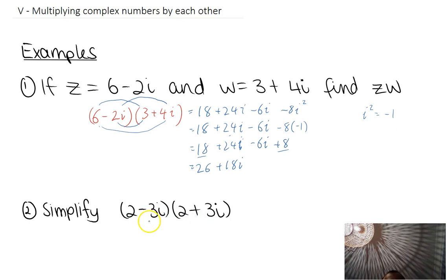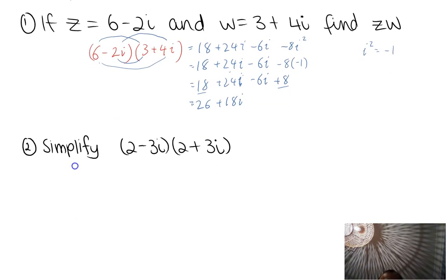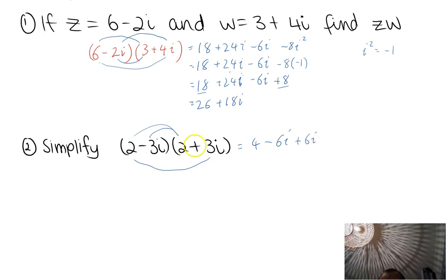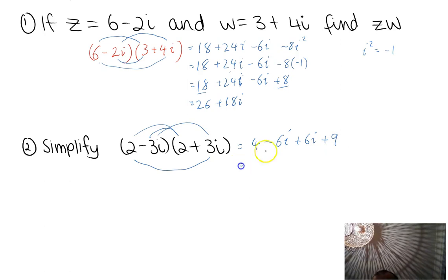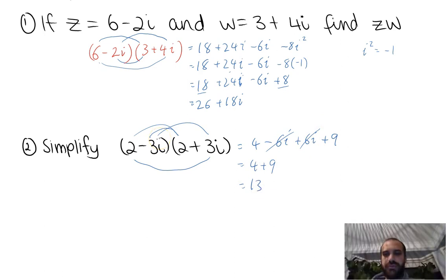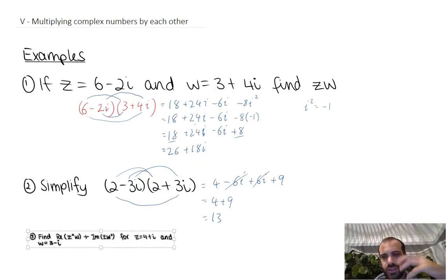I want to show you this because it looks a lot like a difference of two squares type question — let's see what magic happens. 2 times 2 is 4. Negative 3i times 2 is negative 6i. 2 times positive 3i is positive 6i — those cancel. Negative 3i times 3i would be negative 9i squared, and i squared is negative 1, so it's not negative 9, it's positive 9. We get 4 plus 9 equals 13 — a purely real number, not complex at all.